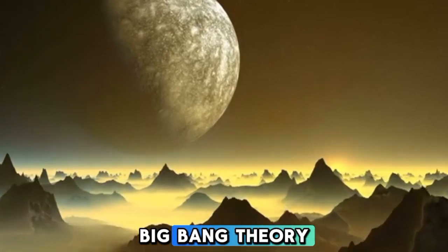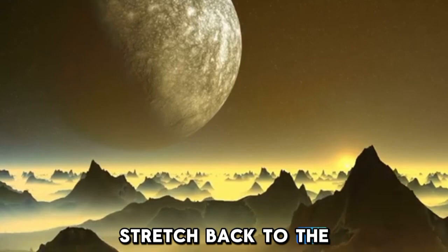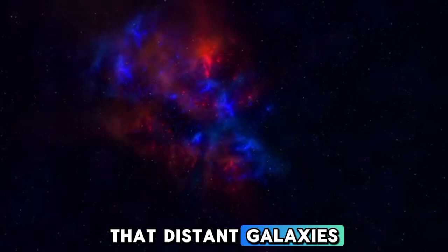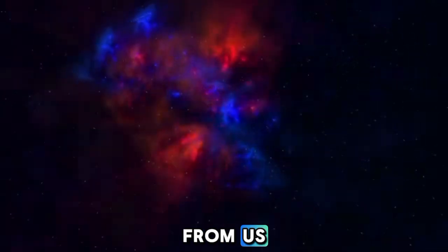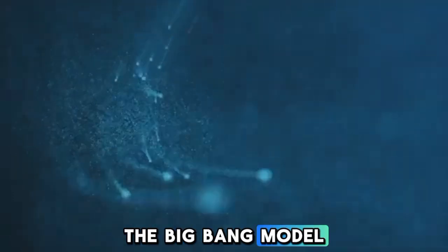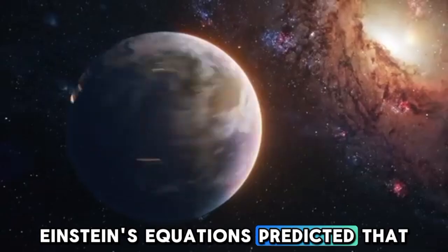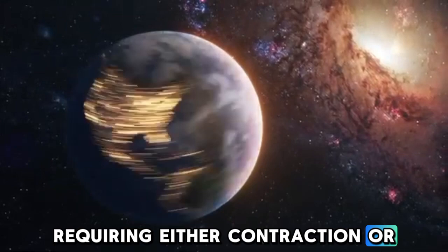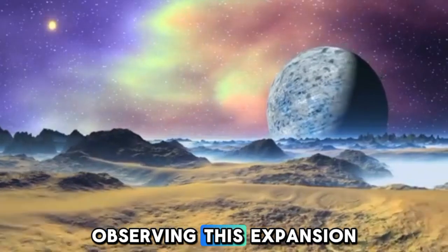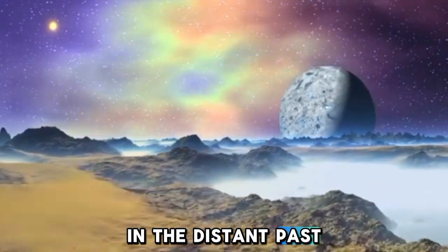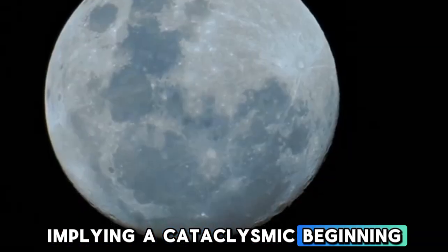The origins of the Big Bang theory and the skepticism surrounding it stretched back to the 1920s and 1930s when astronomers first observed that distant galaxies appeared to be receding from us. This discovery, combined with Albert Einstein's theory of general relativity, set the stage for the Big Bang model. Einstein's equations predicted that a static universe would be unstable, requiring either contraction or expansion. Observing this expansion suggested that galaxies must have been closer together in the distant past, implying a cataclysmic beginning for the universe.